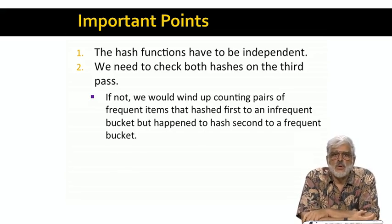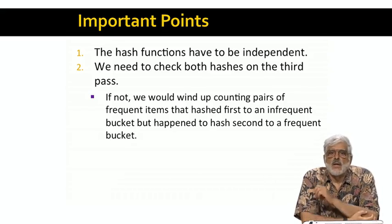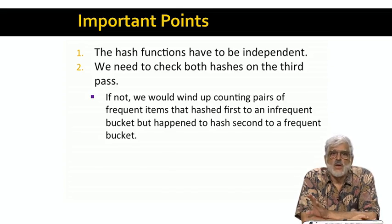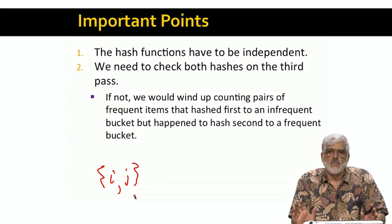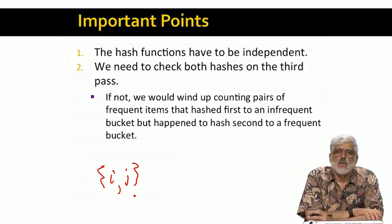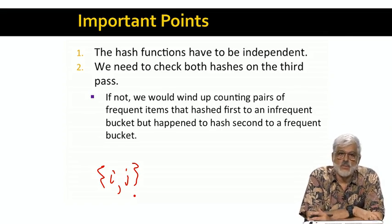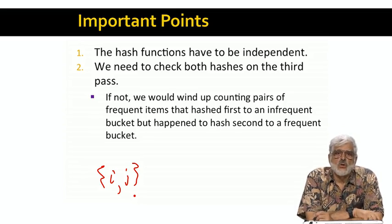A common question is why we need the second condition — that the pair hashes to a frequent bucket on the first pass — since unless a pair meets that condition, it's not hashed to a bucket on the second pass. But if we don't enforce condition two along with the other conditions on the third pass, we can get unnecessary candidates. Consider a pair i,j where i and j are frequent but the pair is not, and the pair hashes to an infrequent bucket on the first pass. It's possible that i,j would hash to a frequent bucket on the second pass for reasons unrelated to i and j. So we must test condition two along with all the other conditions.